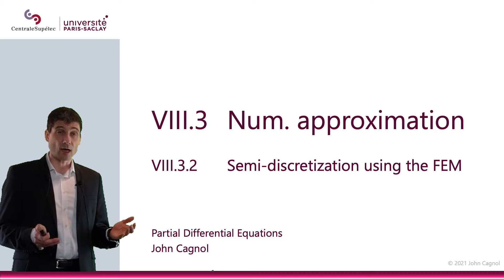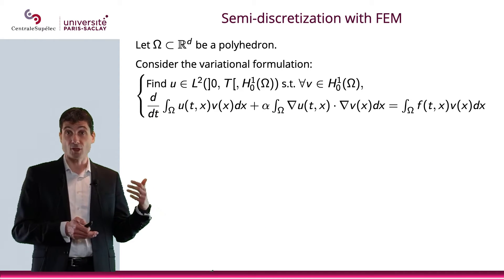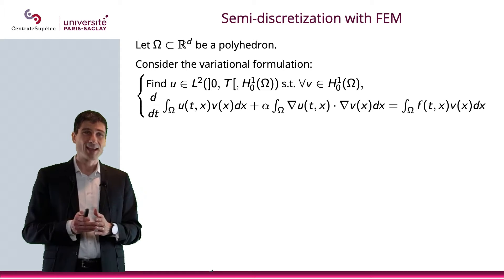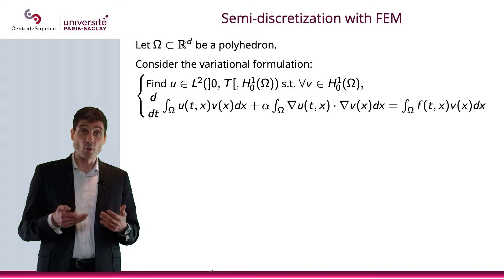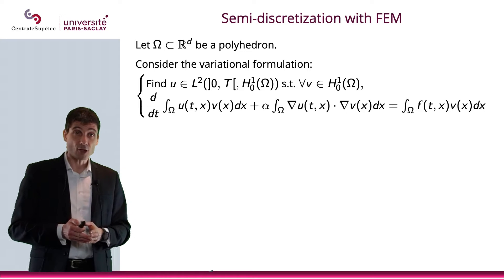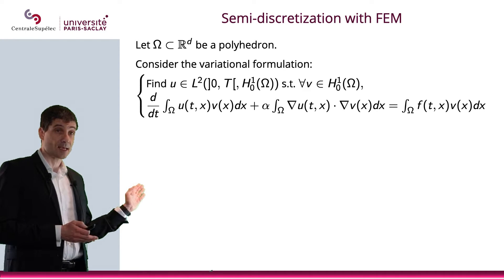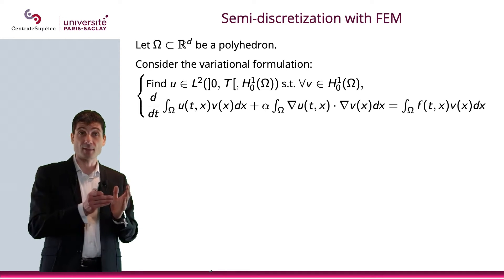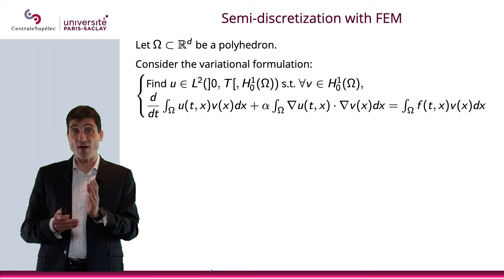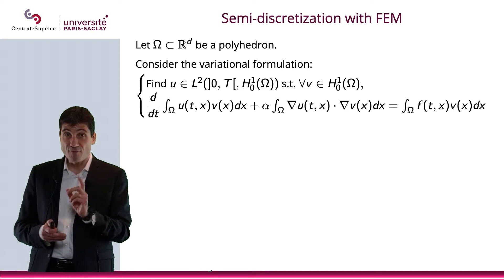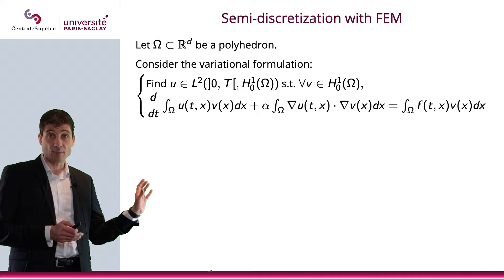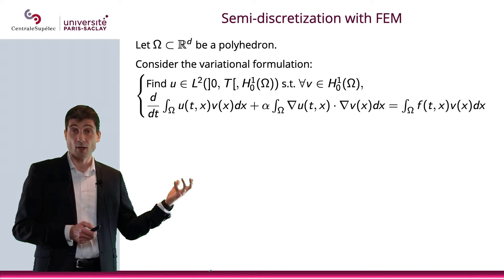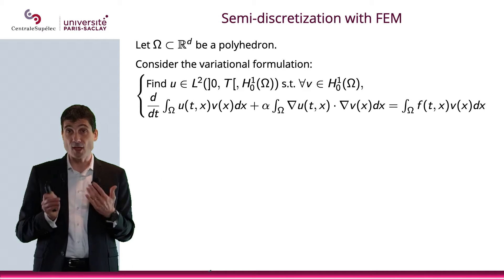So let's consider Ω to be included in R^d, that will be our space domain, d being the number of dimensions of the space, and that will be a polyhedron. We will consider the variational formulation that is here. So you see u will depend on a time t and a space variable x, but v will only depend on the space variable, it will only be in H^1_0 in space, it does not have a time component.